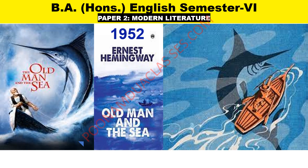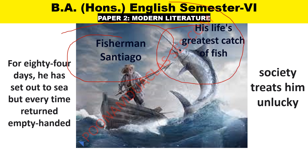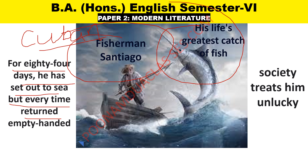Today we are going to cover The Old Man and the Sea, published in 1952. This story is about the fisherman Santiago. It is the story of an epic struggle between an old seasoned fisherman, Santiago, and his life's greatest catch — the fish. Santiago is an aged Cuban fisherman, and for 84 days he has set out to sea but every time returned empty-handed.